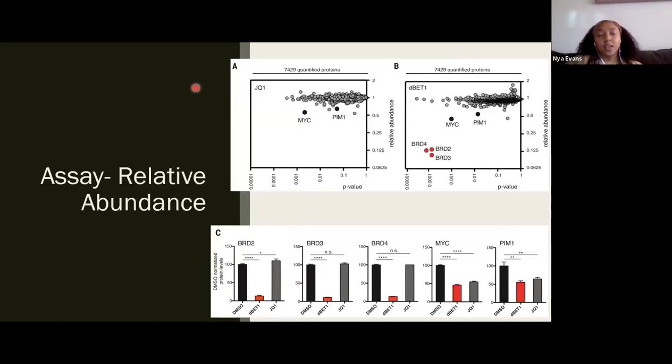So then here, what they did was they took these 7,429 different proteins, and then they added either JQ1 or DBET1, and they wanted to see essentially whether or not these proteins would change or how they would be affected or if they would degrade. And that is measured by the relative abundance of those proteins. So when they added JQ1 to these proteins, they basically saw that none of them really changed because they all are kind of stuck in this one area. But you can see that these two different compounds, MYC and PIN1, they're actually oncogenes. So they're proteins that promote cancer growth. They were affected by the JQ1.